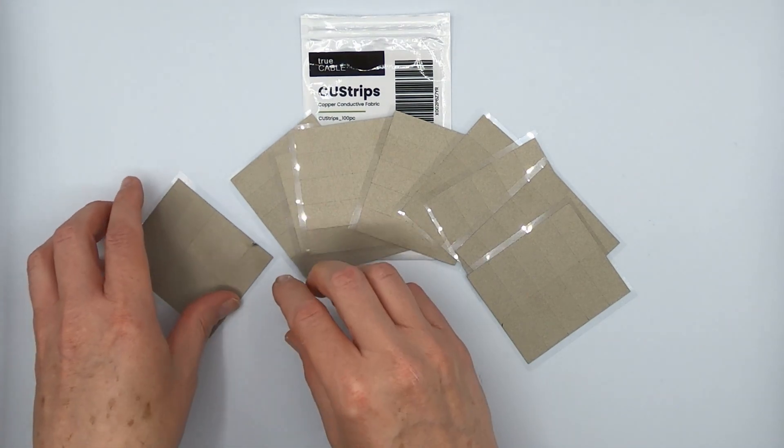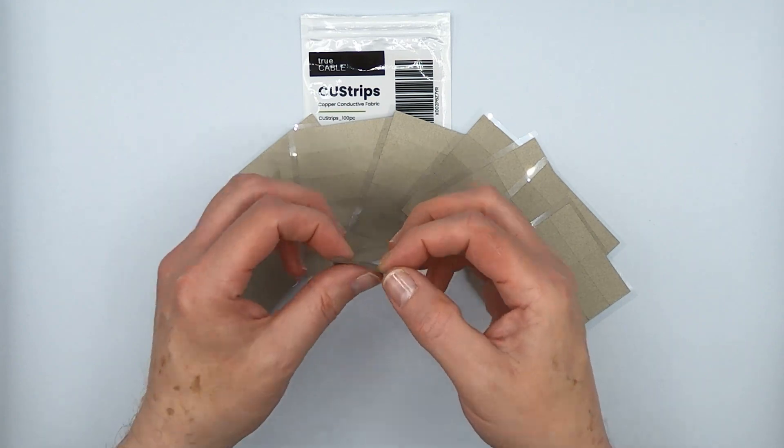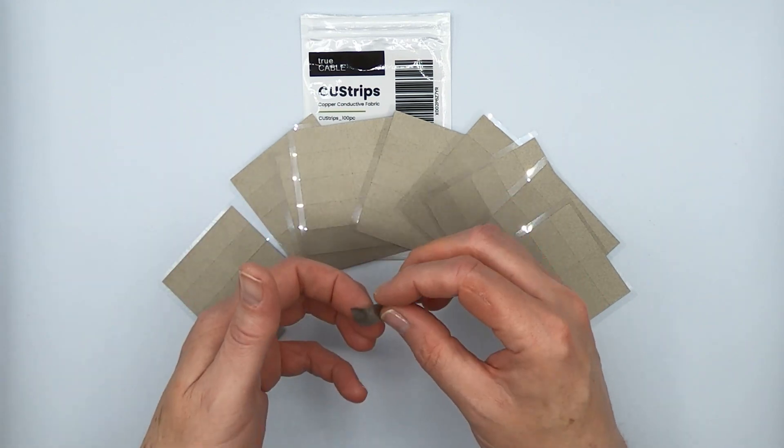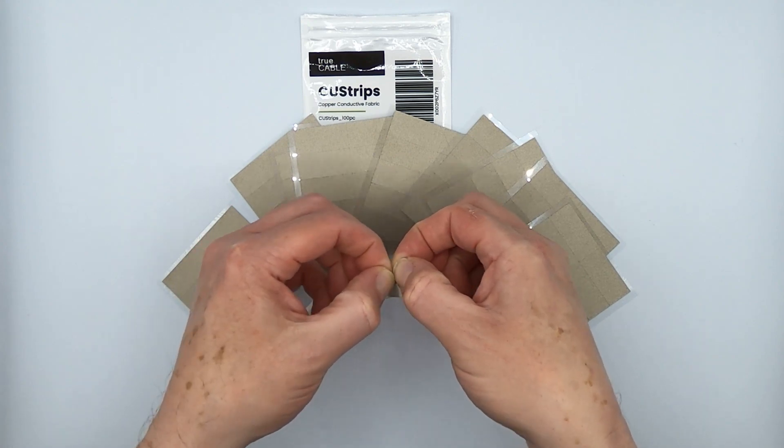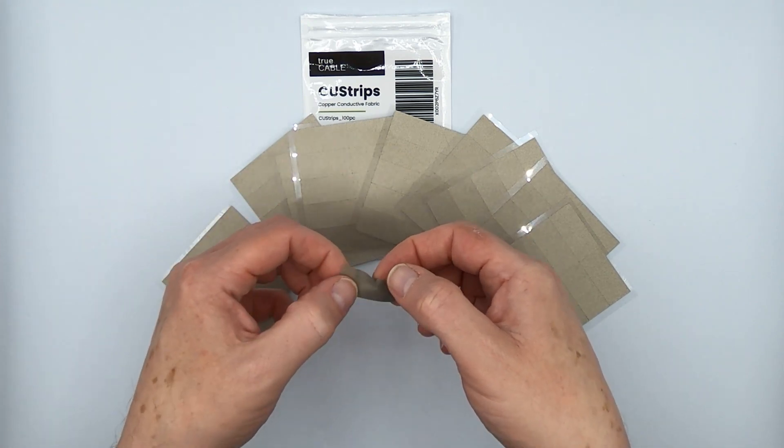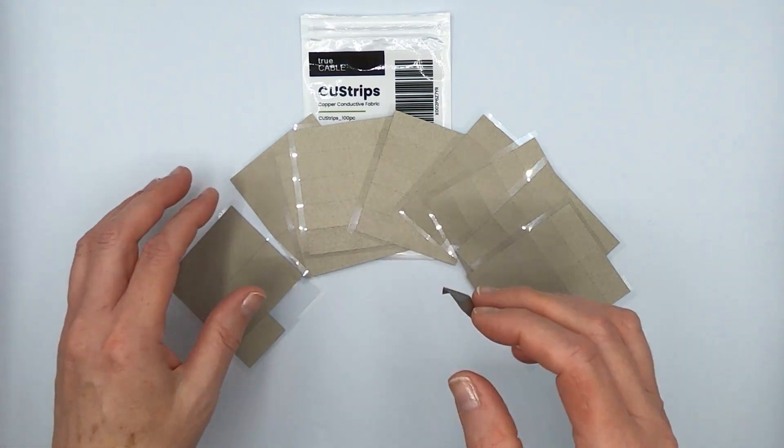And so, copper fabric strips on the other hand, they're thin. And they have the same conductive adhesive and a copper-infused fabric. So they're quite a bit tougher to rip apart. In fact, they're pretty sturdy. And when they wrap around that cable, they don't add anything to the thickness of it.